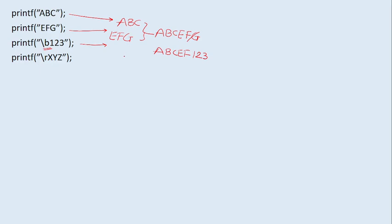Backslash b cancels the last character on your output screen, so your output will become 'abcef', and then it will add '123' on screen. In the next line we have backslash r, which means go to the first character of the first column of the output. It starts overwriting: 'a' will be replaced by 'x', 'b' by 'y', 'c' by 'z', and the next characters remain as-is — 'ef123'. So our output will be 'xyzef123'.